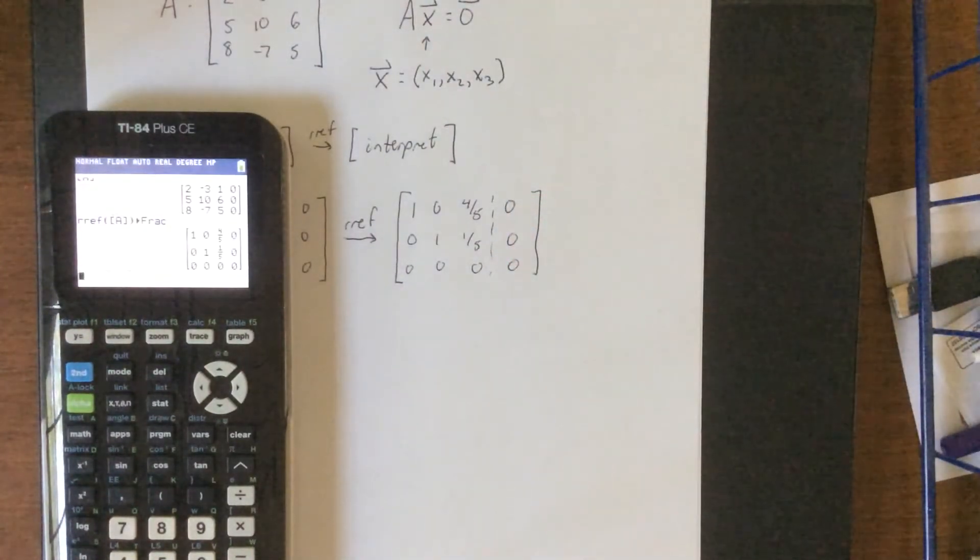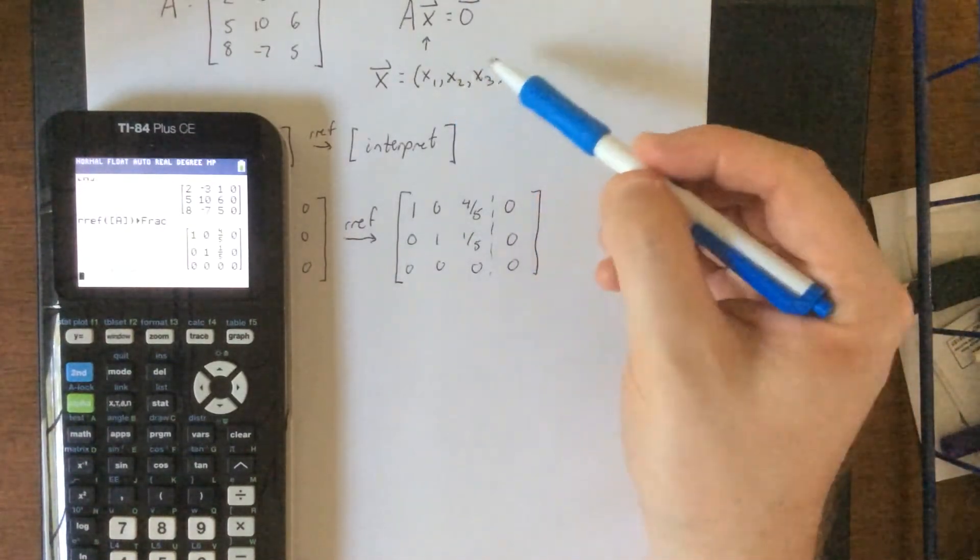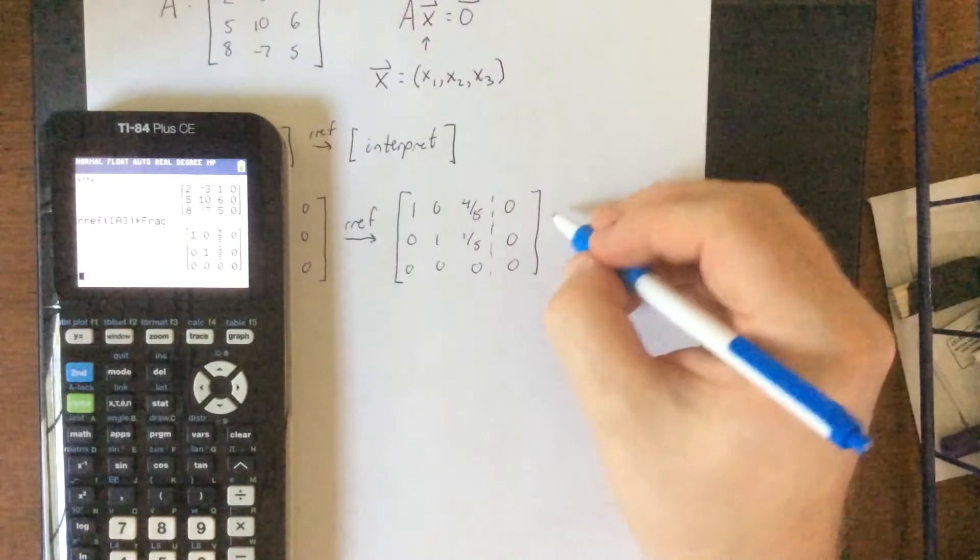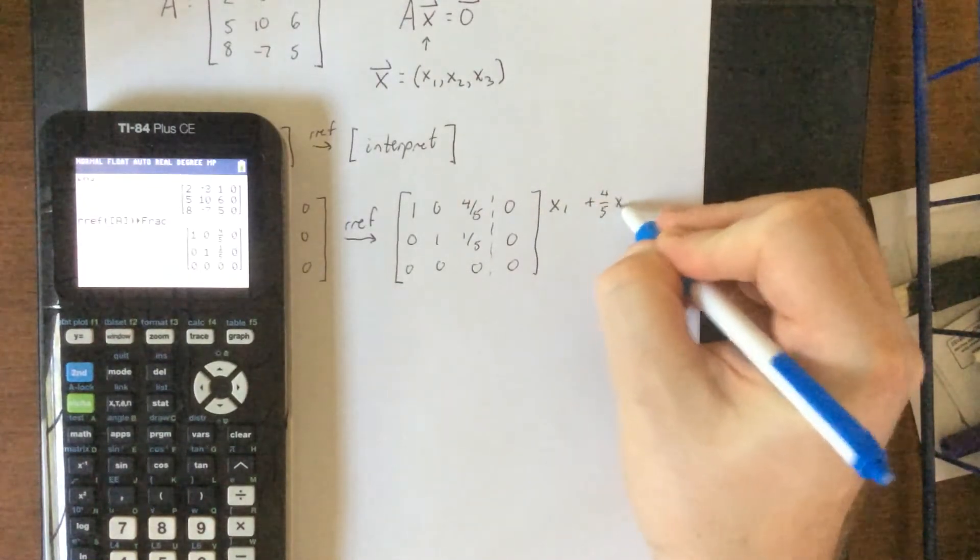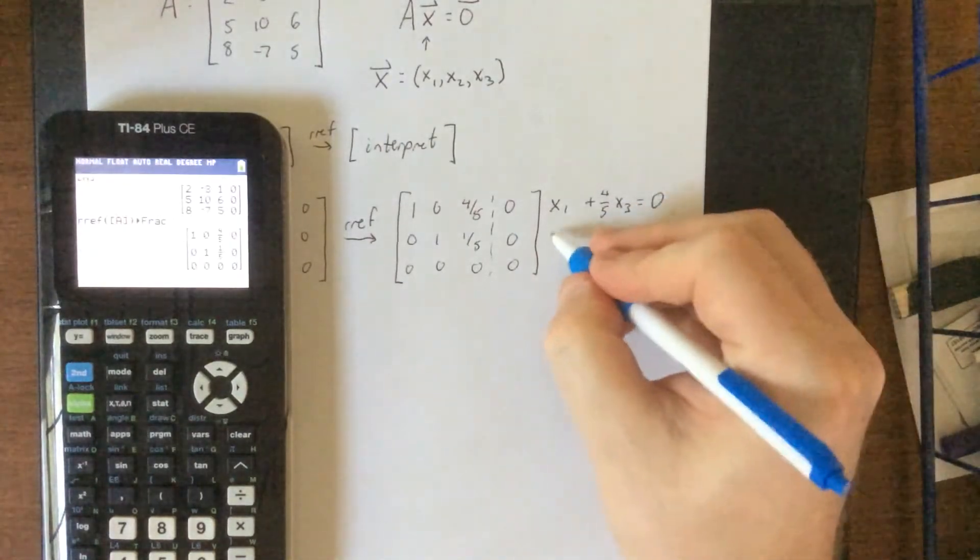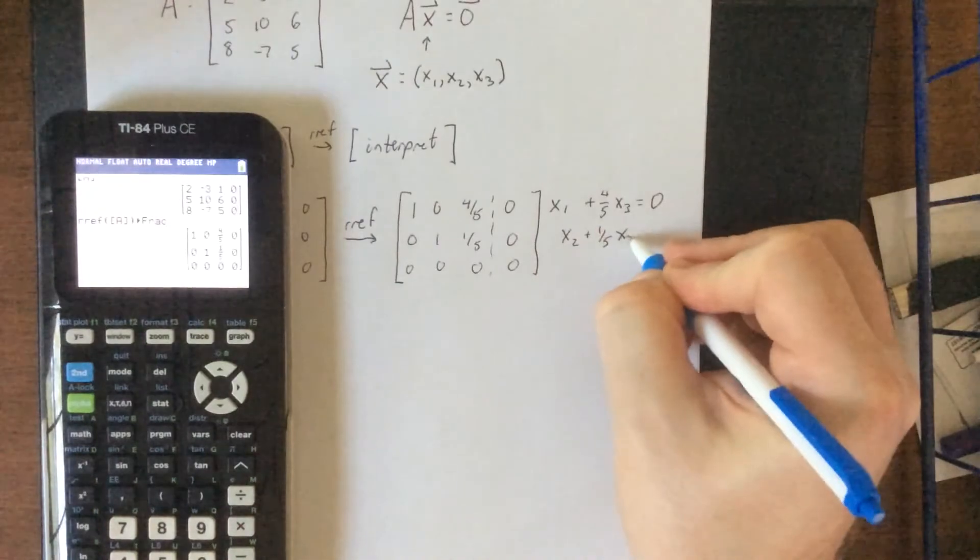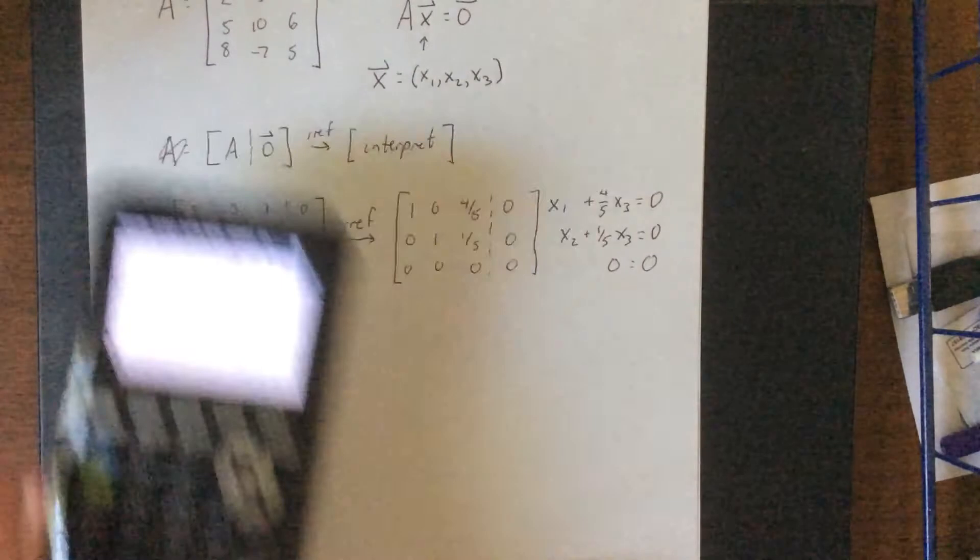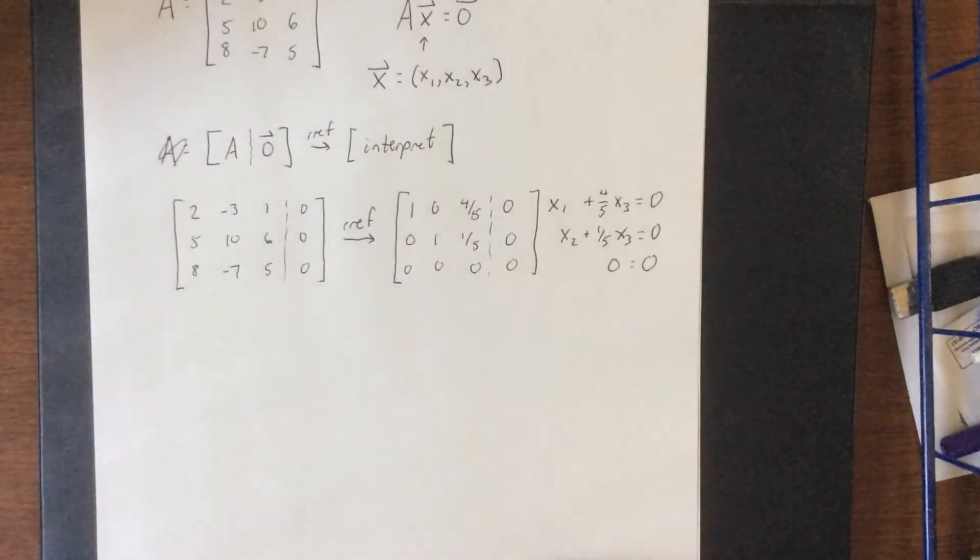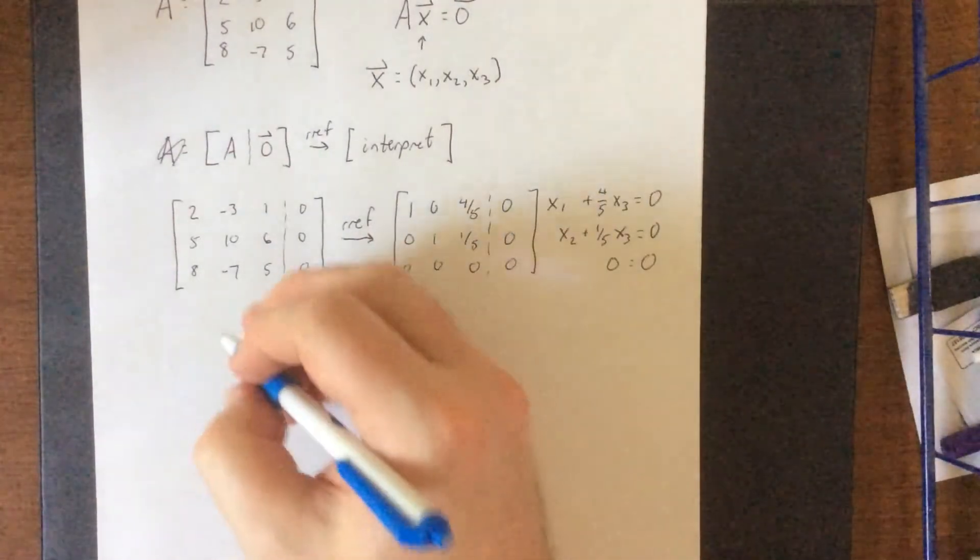So interpreting these appropriately, the first column represents x1, second column represents x2, and the third represents x3. We can interpret this as x1 plus four-fifths x3 is equal to zero. Second row tells us that x2 plus one-fifths x3 is equal to zero, and the third row tells us that zero is equal to zero. Now with that in mind, that means that we have two lead variables, x1 and x2, with x3 being our free variable.